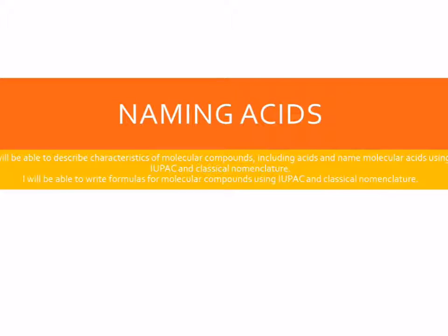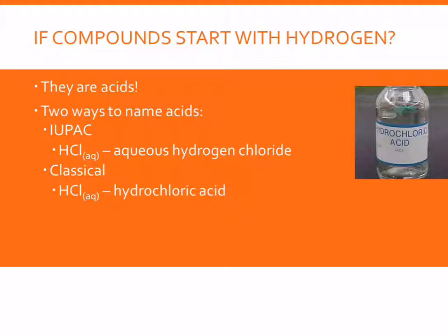In this video we're going to review naming acids using the classical naming method. So how do we know if a compound is an acid? If they start with a hydrogen they are always acids.